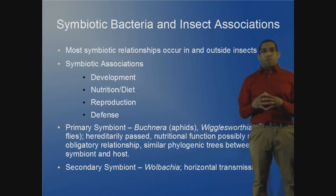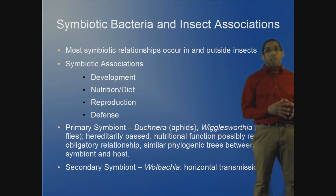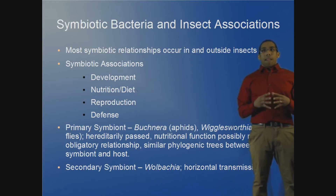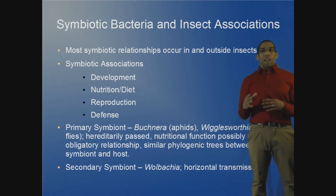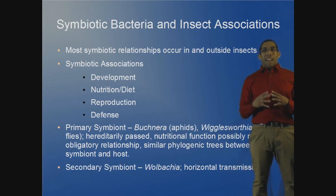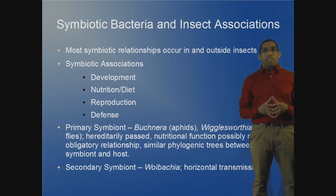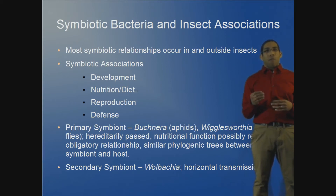In insect symbiosis there are two categories. Primary symbionts are transmitted vertically from parent to offspring, and their role is usually nutritional. For example, Bucknera's primary role is in amino acid synthesis, as I'll discuss in a moment.